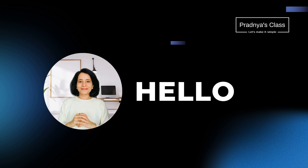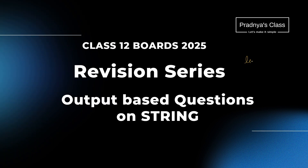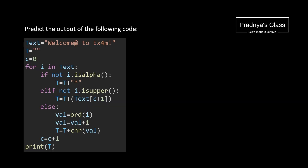Hey everybody, welcome back, hope you are doing good. Before we start, let's discuss some output-based questions on string. I got this question from the sample paper for the current session. To solve this type of question we must draw a dry run table. But before that let's try to understand the code in short.